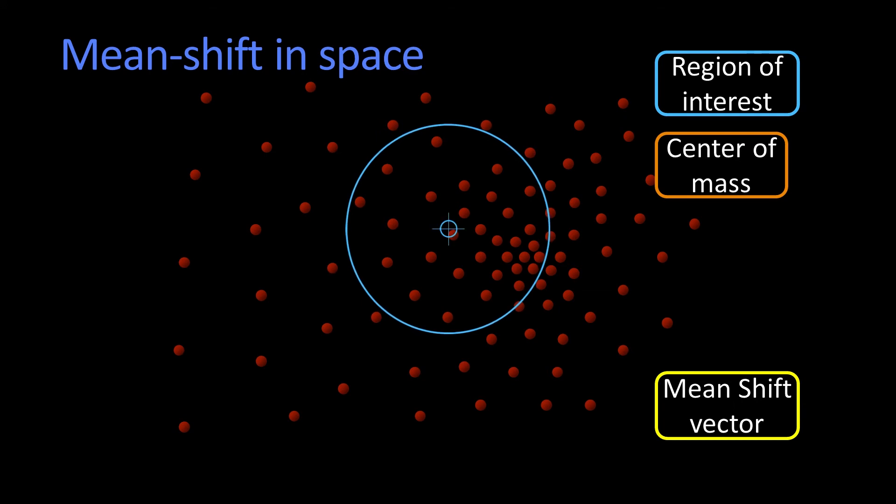And what do I do? I do it again, I compute the weighted center of mass. There it is, new mean shift vector, shift it, marvelous.